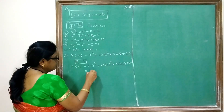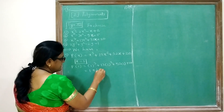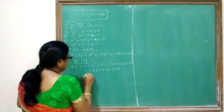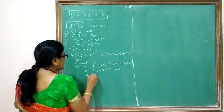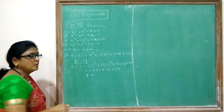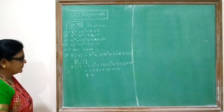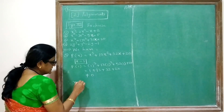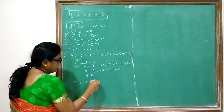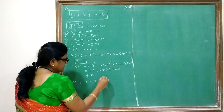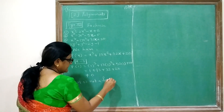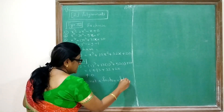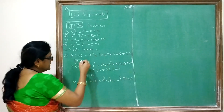Then 1 + 13 + 32 + 20 is not equal to 0. That means x − 1 is not a factor of P(x).